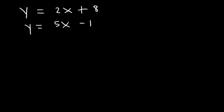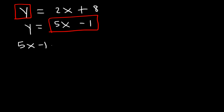What we need to do is replace y with 5x minus 1, because they're equal to each other. Therefore, 5x minus 1 is equal to 2x plus 8. So now we have one equation with one variable, so we can go ahead and solve it.